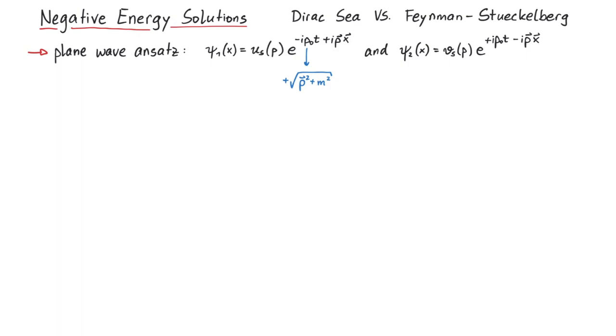So first of all, why is psi_2 called a negative energy solution? If we compare the exponential of psi_2 to the usual time evolution phase e^(-iEt) of non-relativistic quantum mechanics, we see that the energy in this case has to be minus p^0, which is a negative number. But negative energies are strange, so how do we make sense of it?